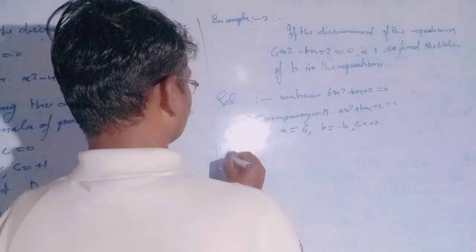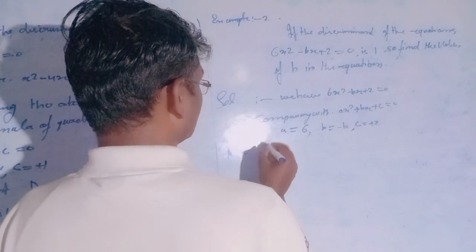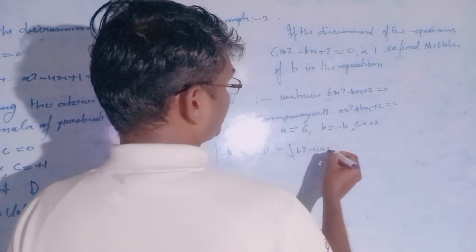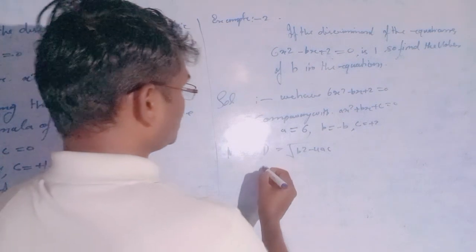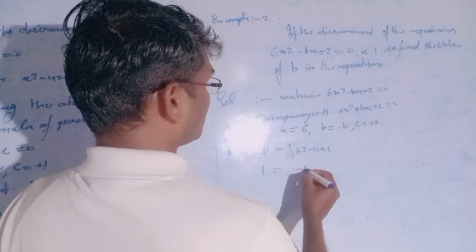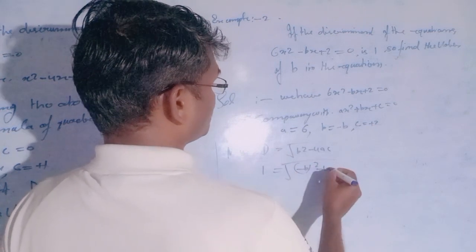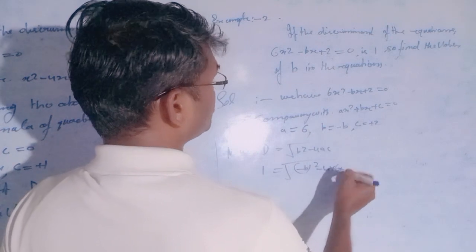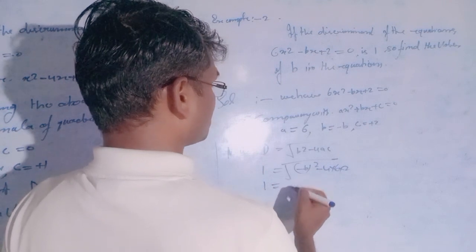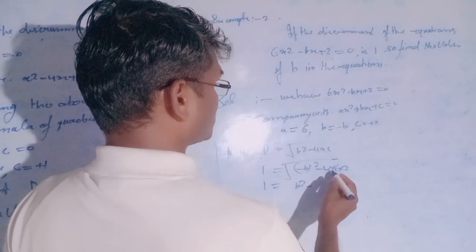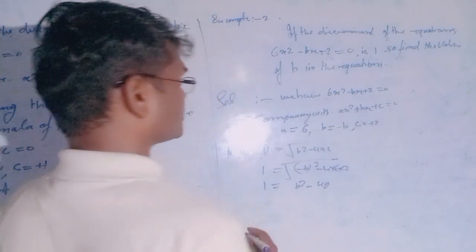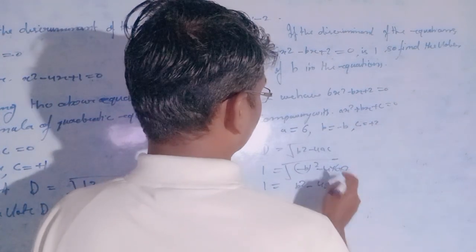Now, discriminant D is equal to b squared minus 4ac. Substituting the values: the b value is minus B, so D equals minus B whole squared minus 4 into 6 into 2, which gives B squared minus 48. We are given that D equals 1, so 1 equals B squared minus 48.